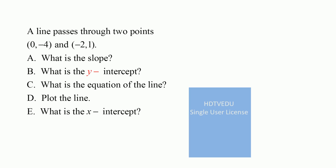A line passes through two points: (0, -4) and (-2, 1). What is the slope? What is the y-intercept? The y-intercept is when x is equal to zero. What is the equation of the line? Plot the line. What is the x-intercept?